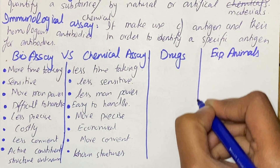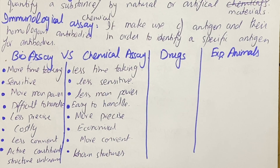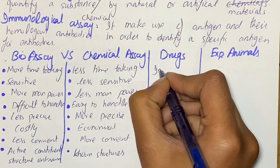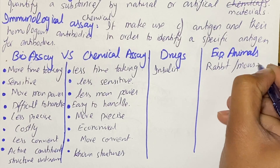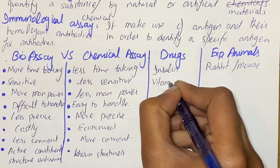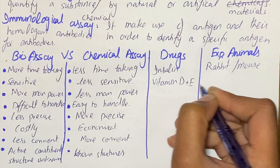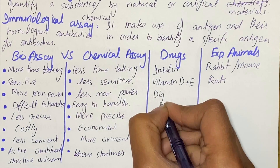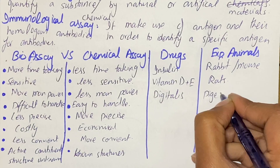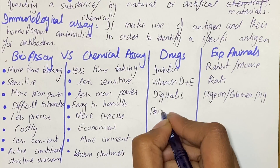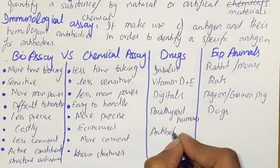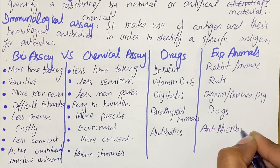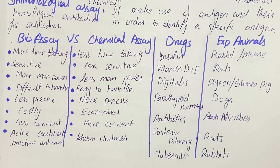Now let's talk about some examples of experimental animals used for drugs in bio assay. Insulin requires rabbit or mouse. For vitamin D and vitamin E, rats are used as experimental animals. For digitalis, we use pigeons or guinea pigs. For parathyroid hormones we use dogs, and for antibiotics we use microbes. For posterior pituitary we use rats, and for tuberculin we use rabbits.